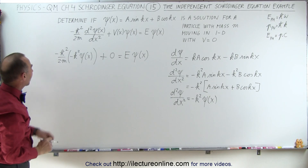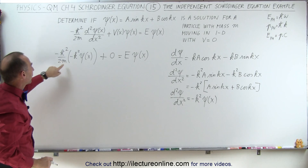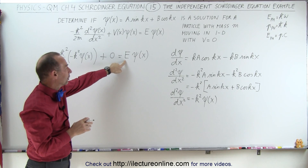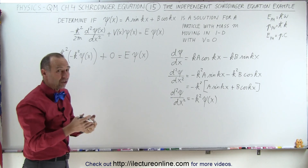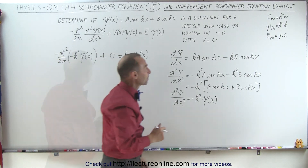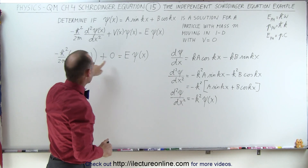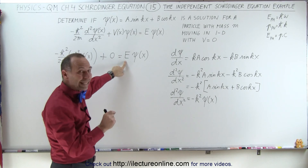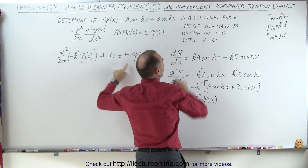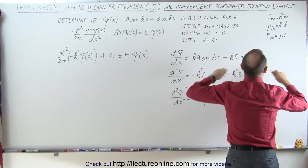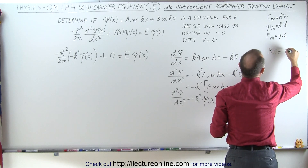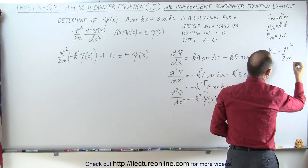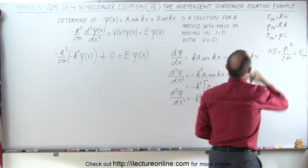On the left side we have h-bar squared k squared divided by 2m, and on the right side the total energy of the particle. Since potential energy is zero, the total energy equals only kinetic energy. The kinetic energy can be written as p squared divided by 2m, which equals the total energy since V equals zero.